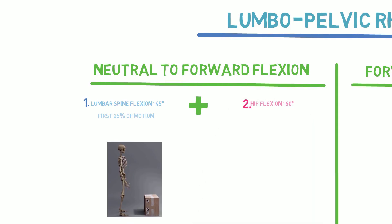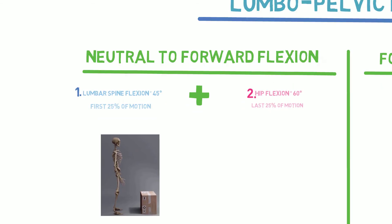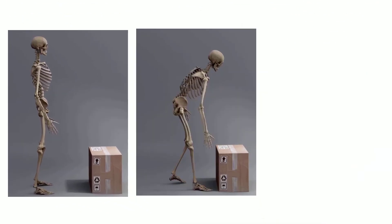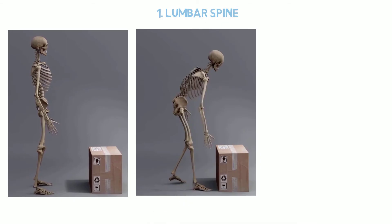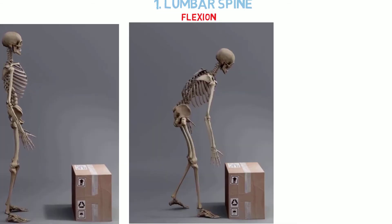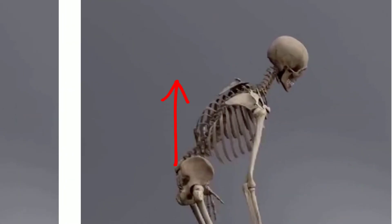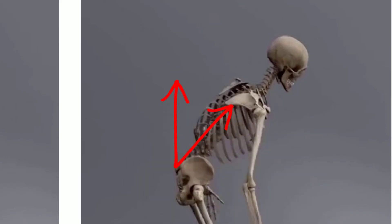So the lumbar spine will initiate the motion first. Initially the lumbar spine flexes forward from cephalad to caudal, one motion segment at a time, producing 45 degrees of flexion. At this point lumbar lordosis flattens.